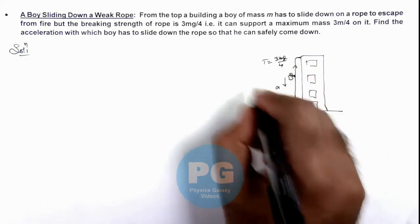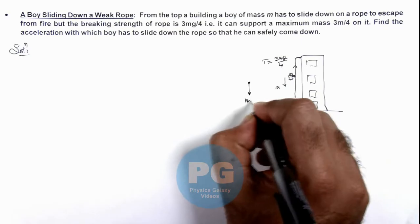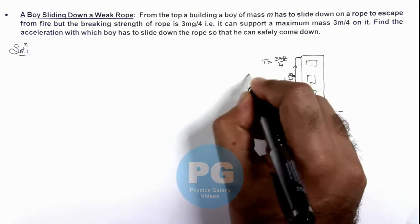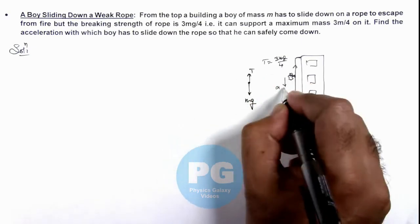If we draw the free body diagram of the boy, his weight is acting in downward direction, upward is tension, and he is coming down with acceleration a.